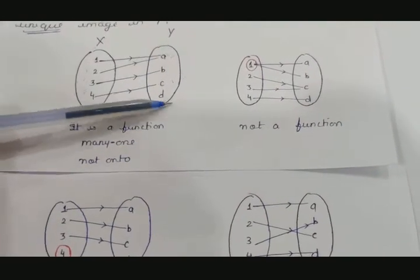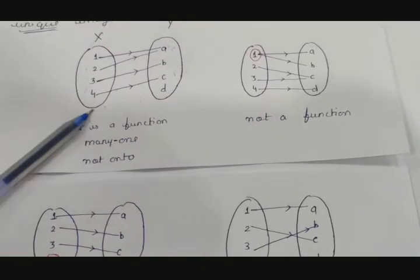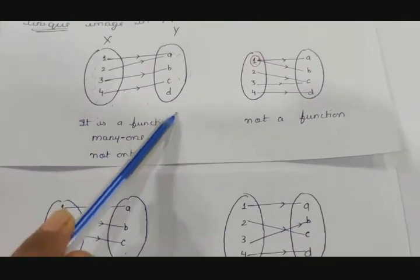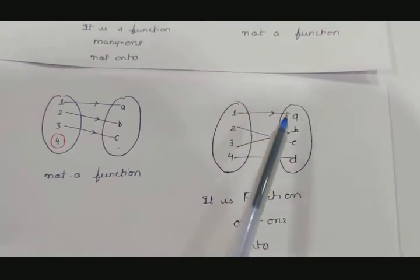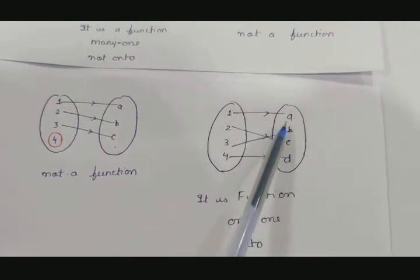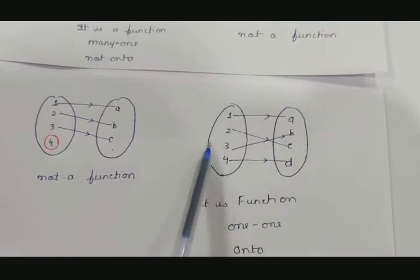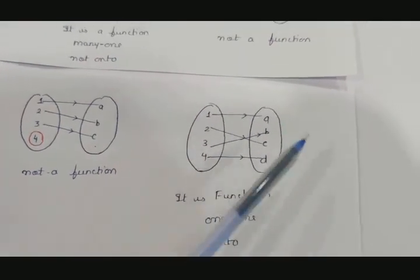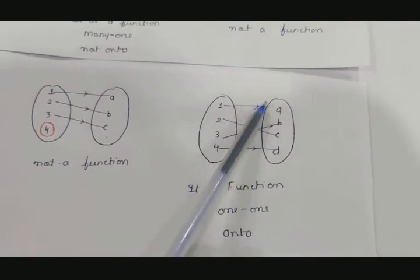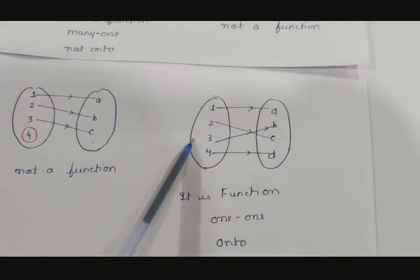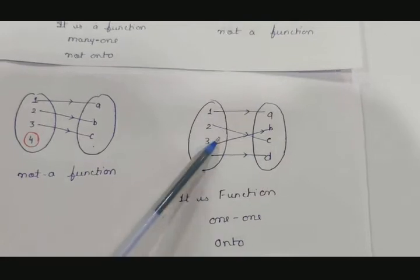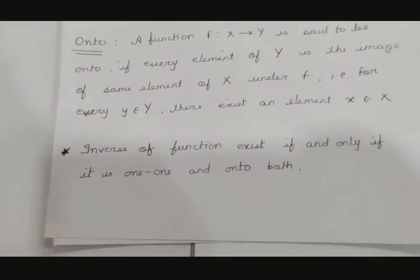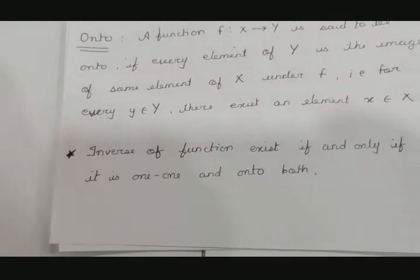Now onto: its definition says all elements in y must have some pre-image in x. In this other example, every element in x has a single image, 1's image is distinct from 2's, 3's is distinct, 4's is distinct — all elements have distinct images — so this function is one-one. And it is also onto because all elements in y have a pre-image in x. So this function is both one-one and onto, meaning its inverse will exist.